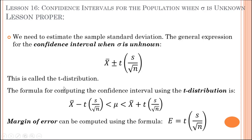The formula for computing the confidence interval estimate using the t-distribution is: x-bar minus t multiplied by (s over square root of n) less than the population mean, less than x-bar plus t multiplied by (s over square root of n). The margin of error can be computed using the formula: E equals t multiplied by the sample standard deviation divided by the square root of the number of samples.